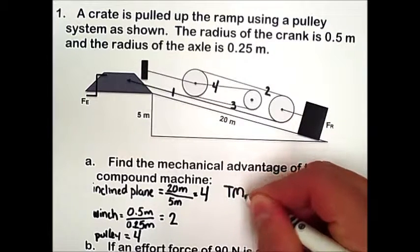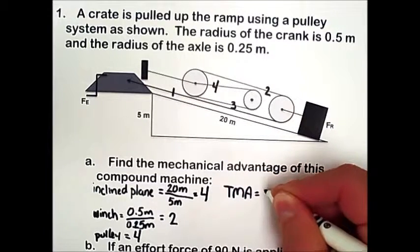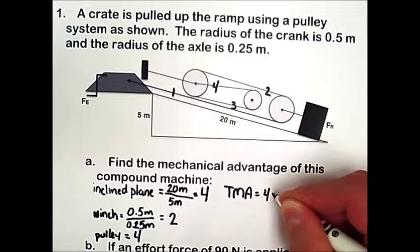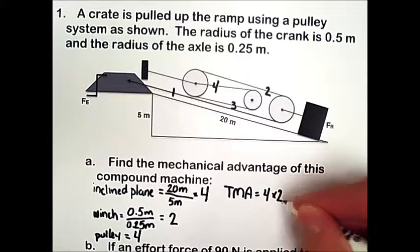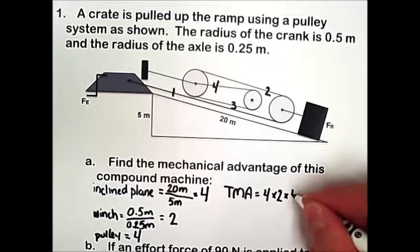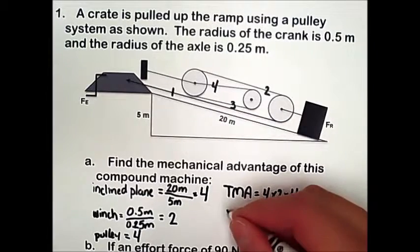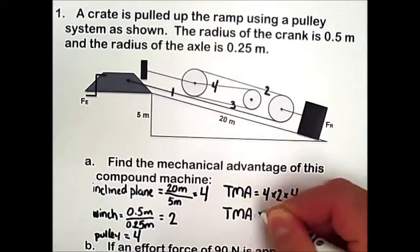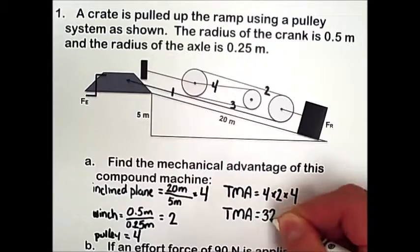So the total mechanical advantage, or TMA, is equal to the mechanical advantage of the inclined plane, multiplied by the mechanical advantage of the winch, multiplied by the mechanical advantage of the pulley system. So our total mechanical advantage is equal to 32.